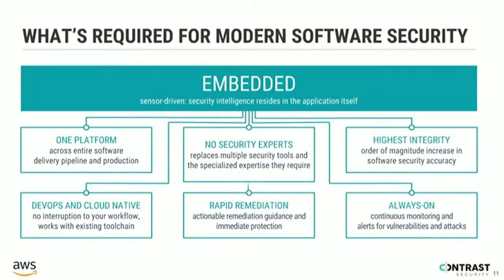When we think about an embedded model, what's required? There are several elements. You would want, for simplicity and scalability, a singular platform that enables you from development through your CI/CD process and testing into production and management of your running applications. We need something that doesn't require an army of people at any single problem — being able to scale without constantly scaling people is critical. We want the highest integrity, a platform that elevates our ability to be more secure while accelerating cloud shifts. We want things that are DevOps and cloud native, and actionable data that's always on.